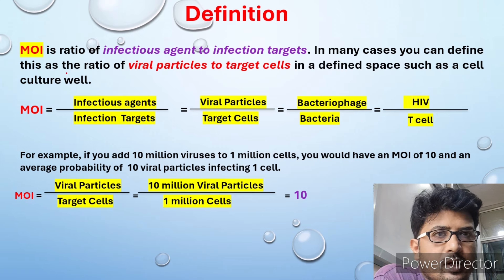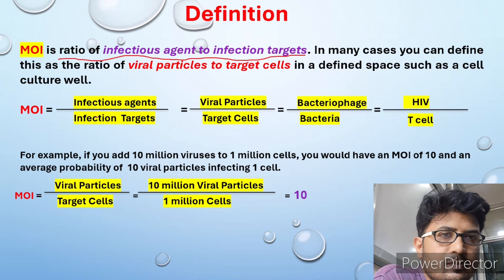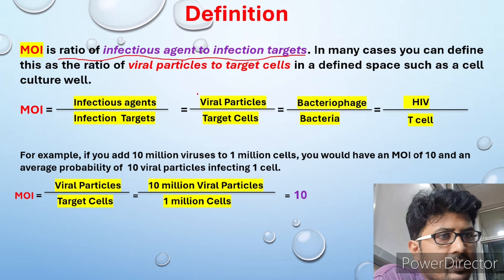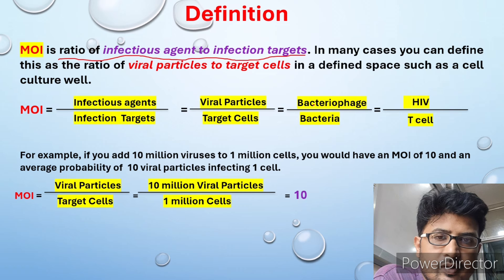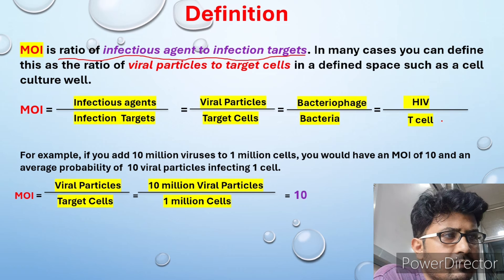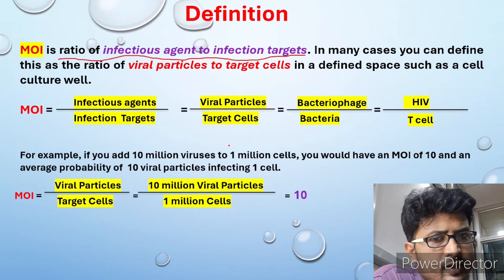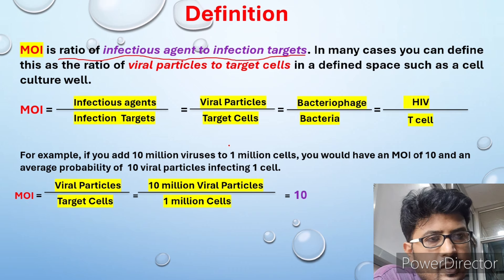MOI is the ratio of infectious agents to infection targets. The infectious agent can be a virus, a viral particle, or a bacteriophage. The target cells can be bacteria against bacteriophage, any animal cell for an animal virus, or you can also consider a plant virus and a plant cell. That depends upon the experiment which you are performing in the lab.